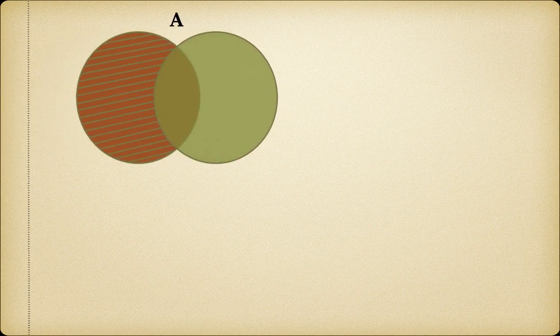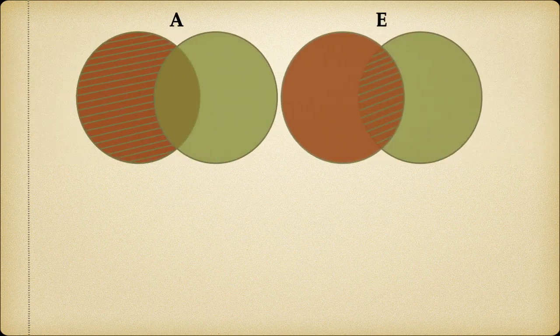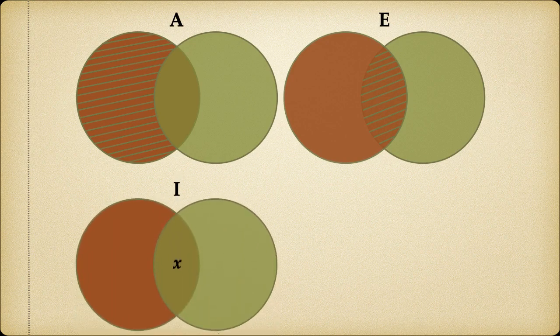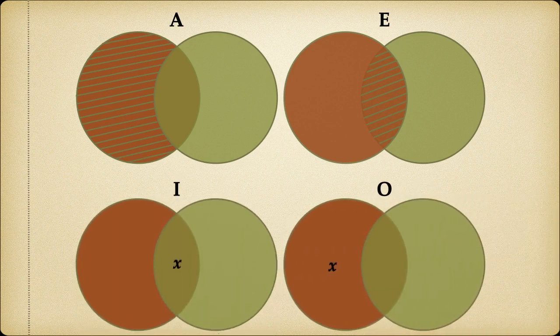Now we know how to make Venn diagrams for each of our four categorical propositions: the universal affirmative, the universal negative, the particular affirmative, and the particular negative.